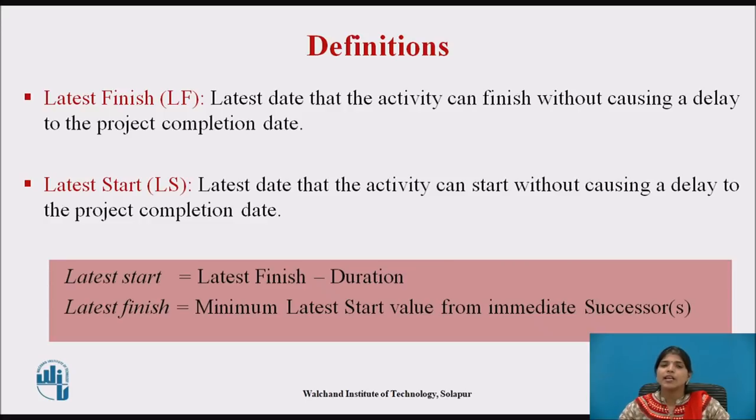For example, if there are two values — six and seven — then you write down six as the latest finish date, taking the minimum value.